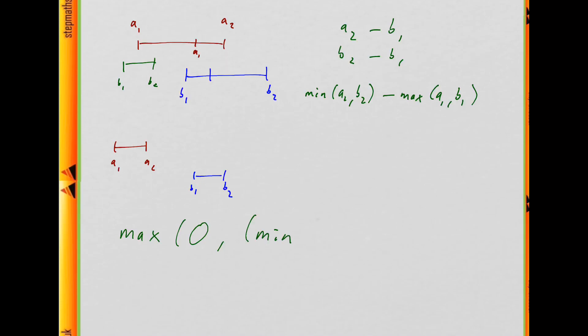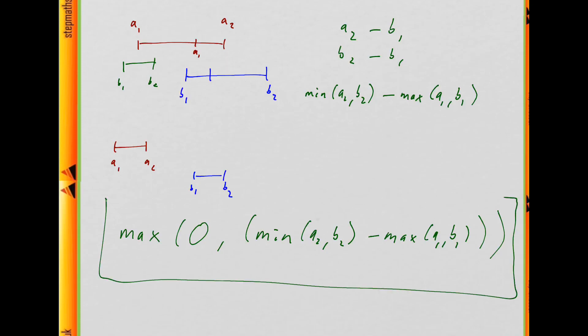What we actually want our answer to be is the maximum of zero and then this expression, which I'll just put in brackets to make it clearer. And now this is going to be our final answer, because for the cases where they overlap we already saw this works, and where they don't overlap we've now made sure that the smallest it can go is zero, so that it can't go negative.